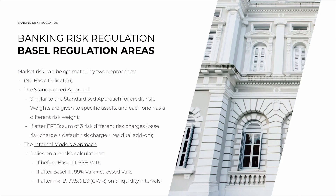Market risk can be estimated by two approaches — there is no basic indicator approach for market risk either. The standardized approach is very similar to the standardized approach for credit risk: we have different asset types with different weights, multiply each asset capital by the risk weight, and add everything up. There is a table for these asset types as well. For example, you might have 100 million in a portfolio with a 5% risk weight giving 5 million, and another 100 million in a riskier portfolio with a 30% weight giving 30 million, and you add everything up.